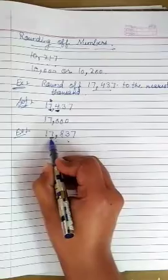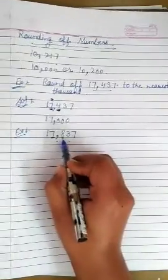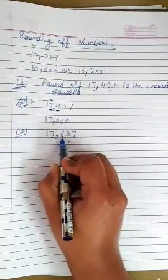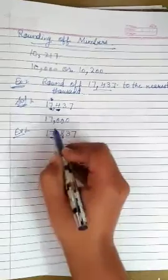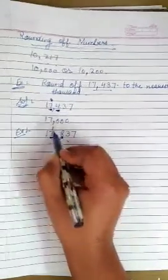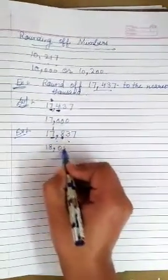At the thousand place, here is 7 and at the hundred place, here is 8. So, 8 is greater than 5, so we give 1 carry to 7. We get the answer 18,000.